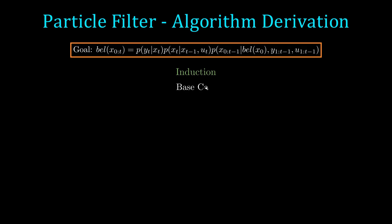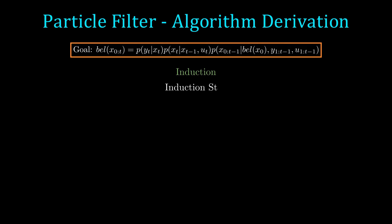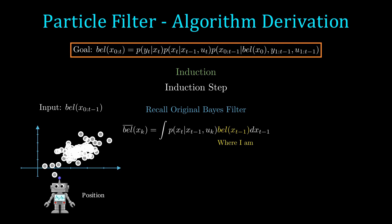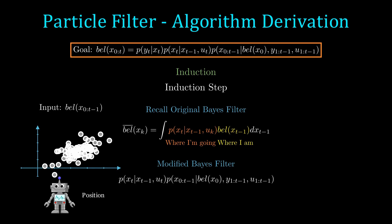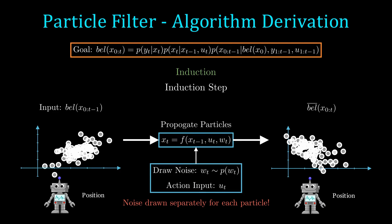Now let's satisfy this goal equation by induction. In the base case, we assume we have a prior belief of bel of x-naught from which we draw N particles. This set of particles trivially satisfies being distributed according to bel of x-naught. In the induction step, assume at time t-1 we have a set of particles that represent bel of x of 0 to t-1. Recall in the original Bayes filter we have a propagation from where we are to where we're going. We don't need the integral because the state x_{t-1} is part of the particle itself. Thus, for each particle, we draw some noise and run it through our motion model. It is important to note that we draw noise independently for each particle, so even if we have two identical particles, the propagation result may not be the same.